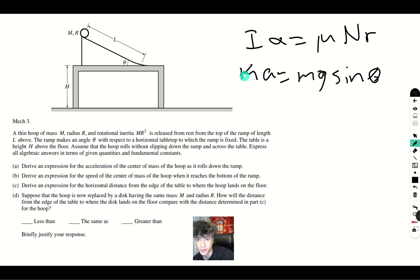So from here we can cancel out our M's. I alpha becomes M R squared times A over R, one of these R's cancels, is equal to mu N R.